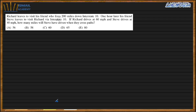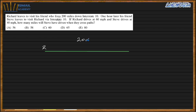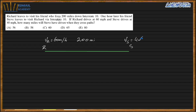Richard lives and wants to visit his friend who lives 200 miles down Interstate 10. The total distance is 200 miles. After one hour, his friend Steve leaves to visit Richard via the same interstate. Richard drives at 60 miles per hour and Steve drives at 40 miles per hour. How many miles will Steve have driven when they cross paths?